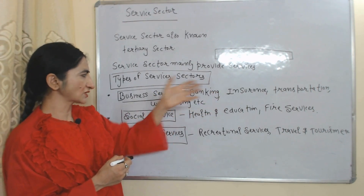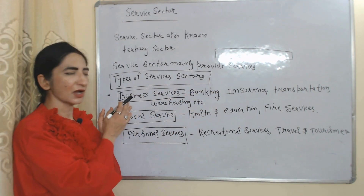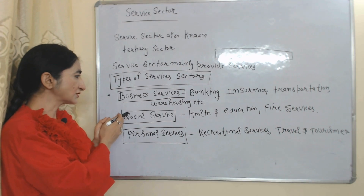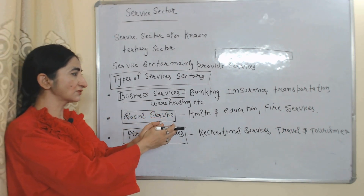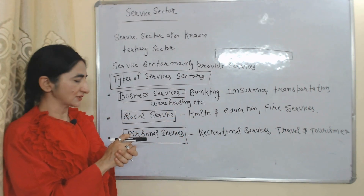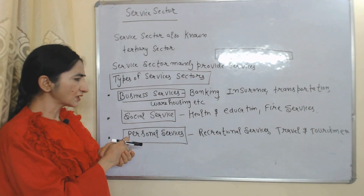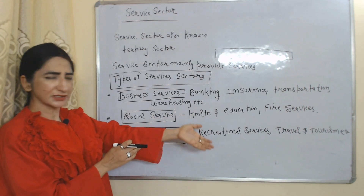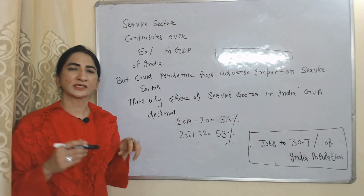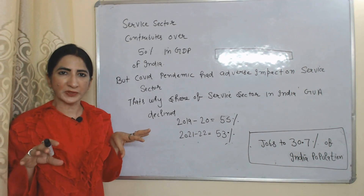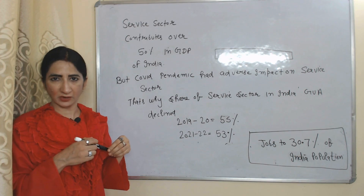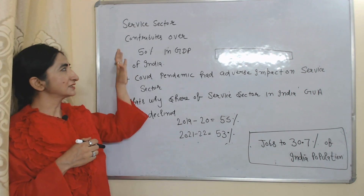Business services include banking, insurance, transportation, and warehousing. Social services include health and education services, fire services, etc. Personal services include recreational services like travel and tourism. The service sector plays a very important role in the growth of the Indian economy.